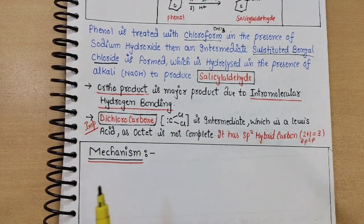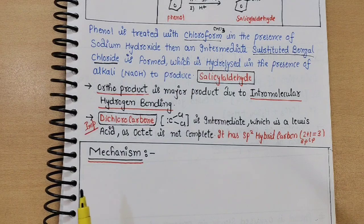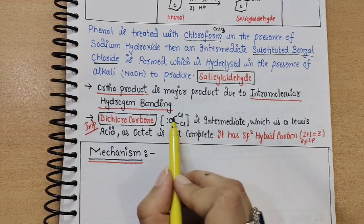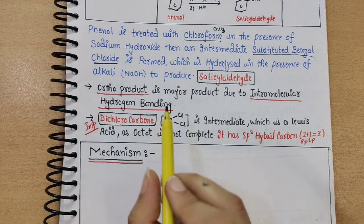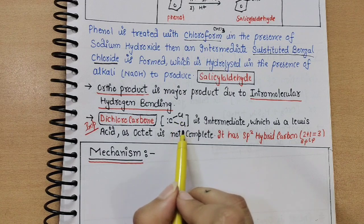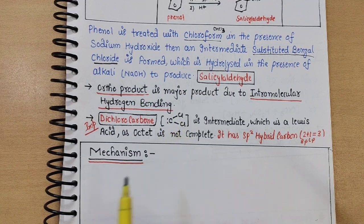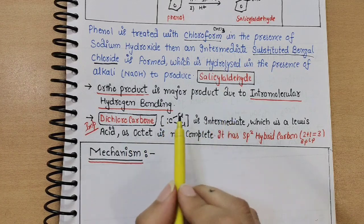Dichloro carbene is a Lewis acid. Carbon normally has 4 valence electrons, but in carbene, if you count all shared electrons around carbon — one, two, three, four, five, six — there are only 6 electrons. The octet is not complete (requires 8), so it is electron deficient. Because the octet of carbene is not complete, it is termed a Lewis acid — an electron-deficient species.